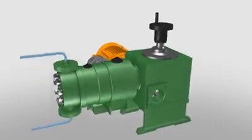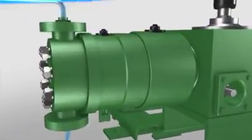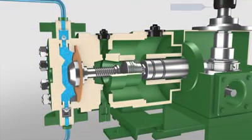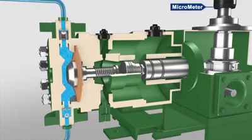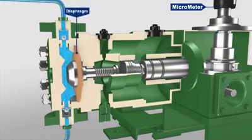Also called a dosing pump, it is a small positive displacement pump. It is designed to pump a very precise flow rate of a chemical or substance into either a water, steam, or gas flow.